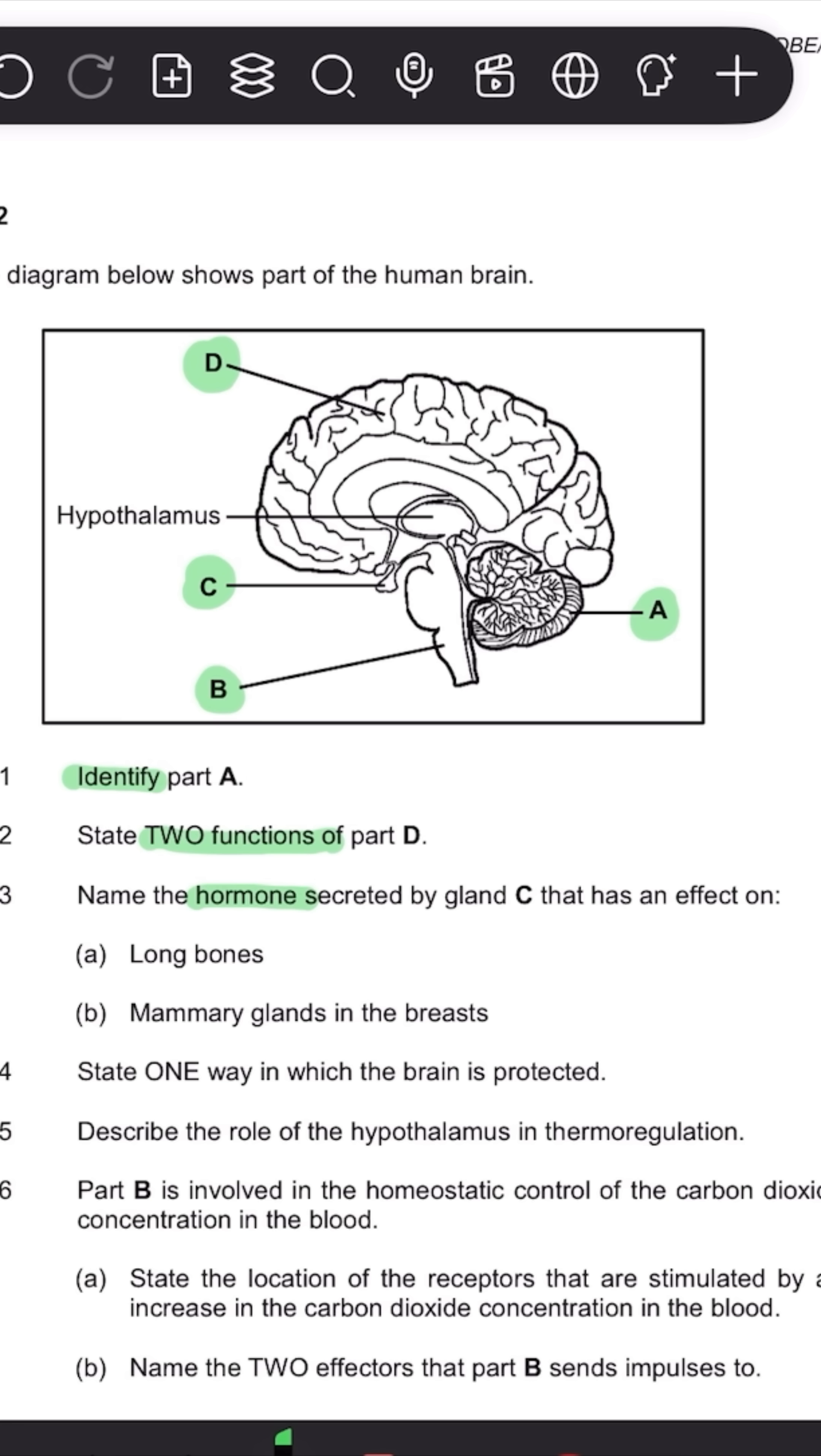State one way in which the brain is protected. So again, it is one way. Okay, so your answer is just one word or like one short paragraph. Describe the role. The next one is describe the role. So this one can be a little bit more wordy. Remembering to check the mark allocation and ensure you have four clear points.